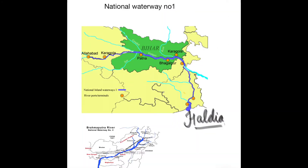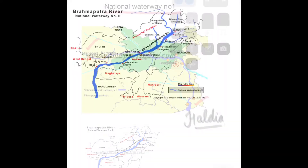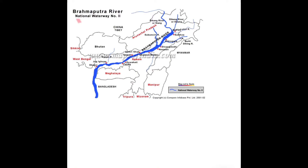National Waterway Number 1 is on the river Ganga and stretches from Allahabad to Haldia, a distance of 1620 km. It is the longest national waterway in India.